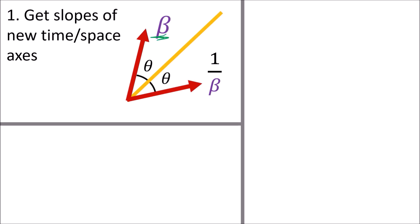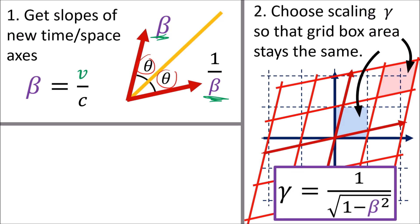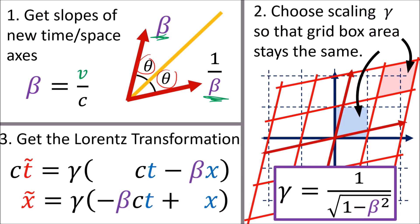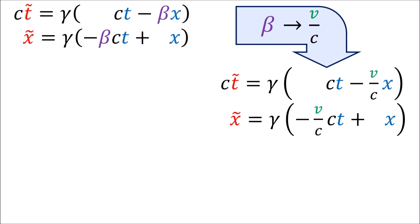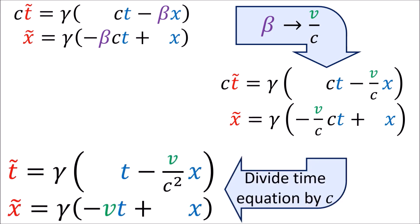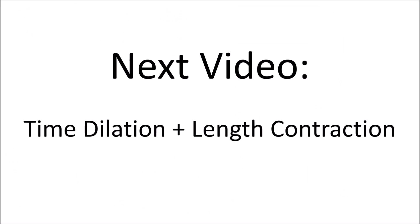To summarize: the slope of the new time axis is beta, and since the time and position axes make equal angles with a light beam, the position axis slope is 1/beta. We choose gamma so the coordinate grid box area stays the same before and after the transformation, giving the Lorentz transformation equations. Note that substituting beta = v/c and dividing the time equation by c yields the version common in high school textbooks, though this series will use the ct and beta form. The next video covers how the Lorentz transformation leads to time dilation and length contraction.